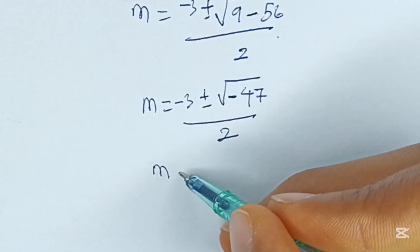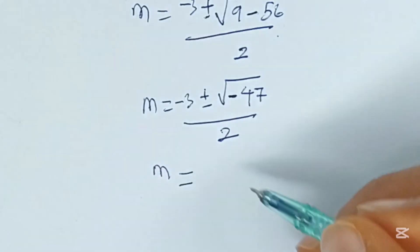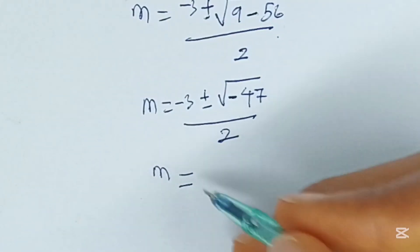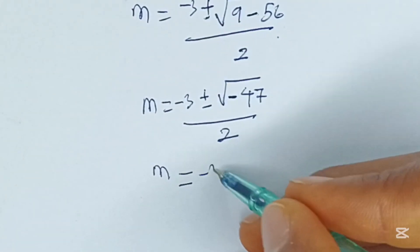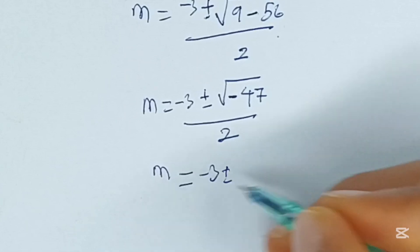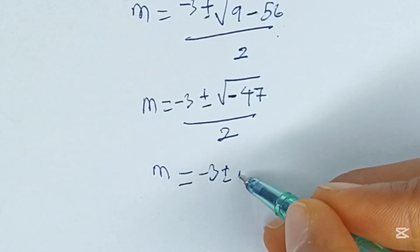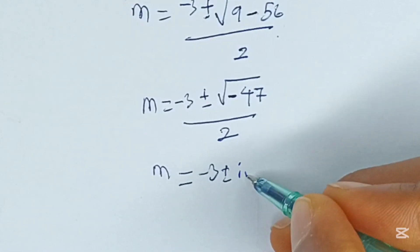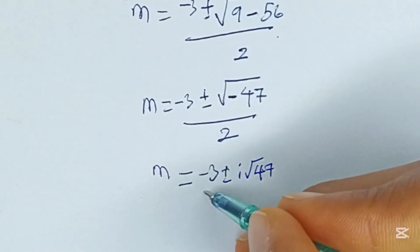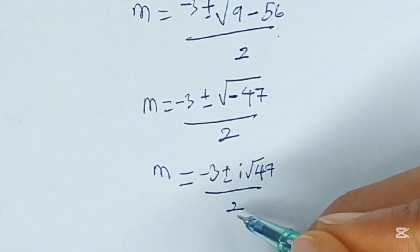So m finally will be equal to: the square root of negative 47 can be expressed as i times the square root of 47. So we have minus 3 plus or minus i root 47, all over 2.